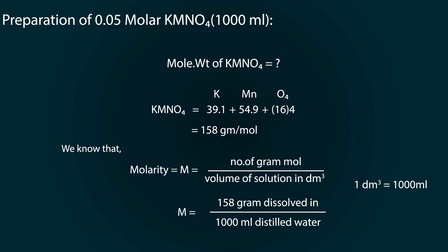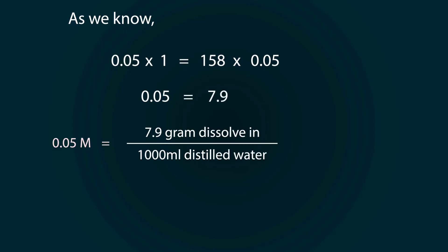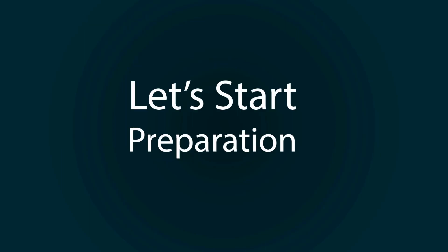But we have to make 0.05 molar. For that, I am using a conversion factor. As we know, 158 grams gives 1 molar. For 0.05 molar, we multiply 0.05 on both sides. We have to add 7.9 grams of potassium permanganate for 0.05 molar. Let's start preparation.